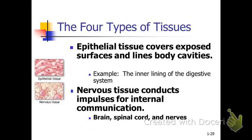Then there's epithelial tissue. These are the tissue types that cover your body, cover your organs, and line your body cavities — including serous membranes. And finally, there's nervous tissue, specialized for conducting electrical signals. We find lots of nervous tissue in the brain and the spinal cord. Those are the four different types of tissues.